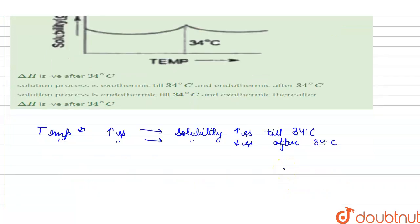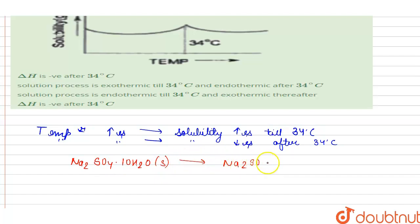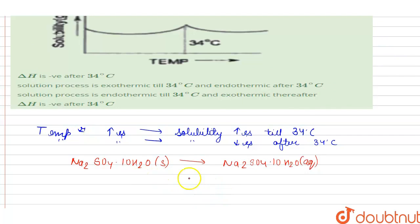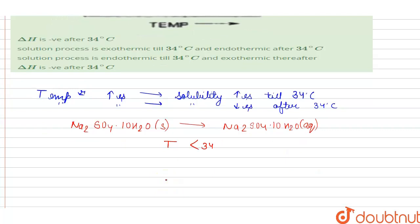Now if we see the reaction: Na₂SO₄·10H₂O (solid) dissolves to produce Na₂SO₄ (aqueous solution). We see that when the temperature is less than 34 degrees Celsius, the reaction is endothermic.